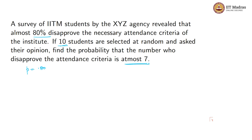How many students have you chosen? 10. So your n will be 10. What you have been asked here? Find the number who disapproved the attendance criteria is at most 7. That means you have to find the probability where x is the random variable representing the number of students who disapproved the attendance criteria, so the value is at most 7, i.e., x less than or equal to 7.